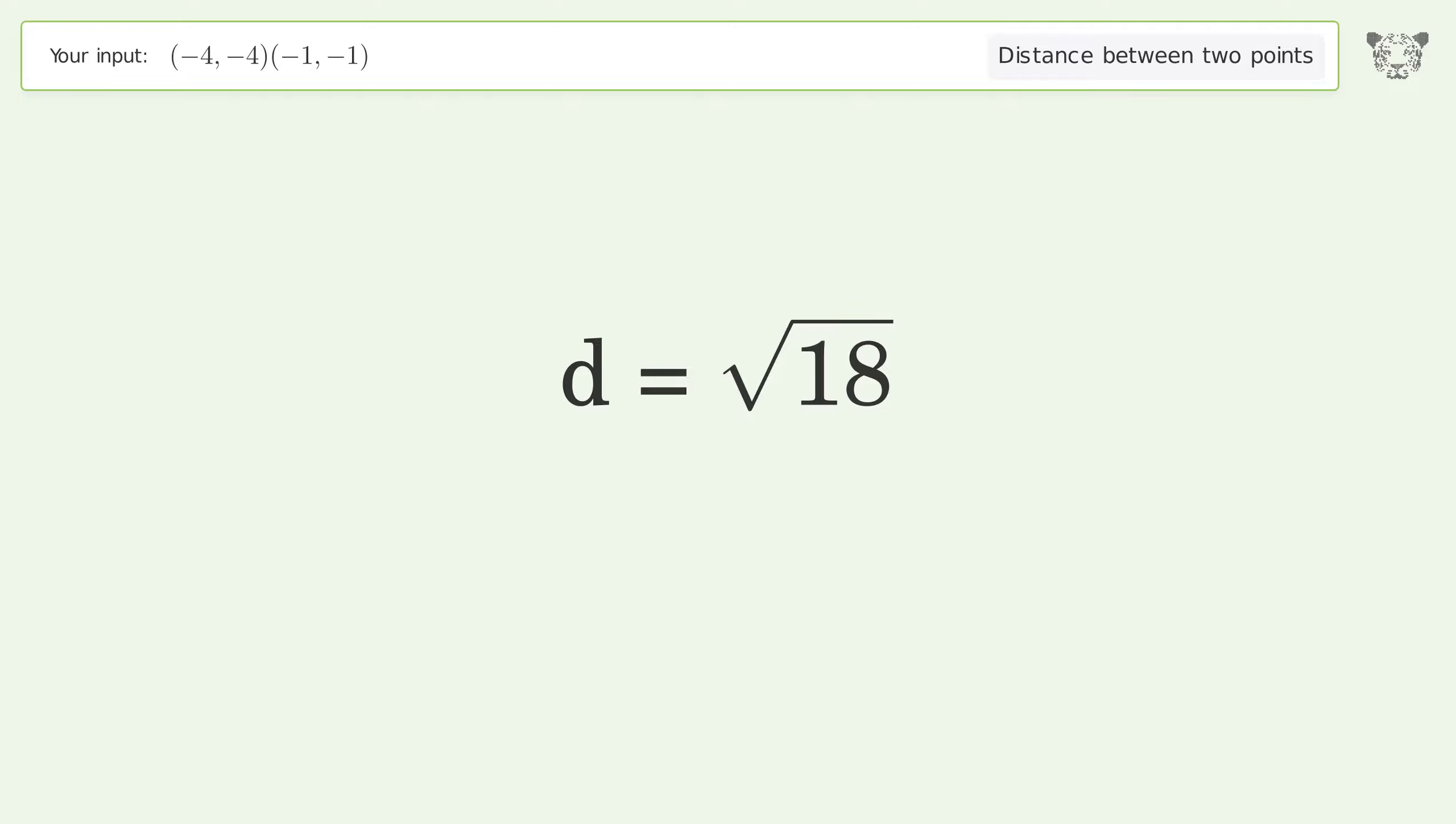And so the distance between the two points is the square root of 18 or 4.243.